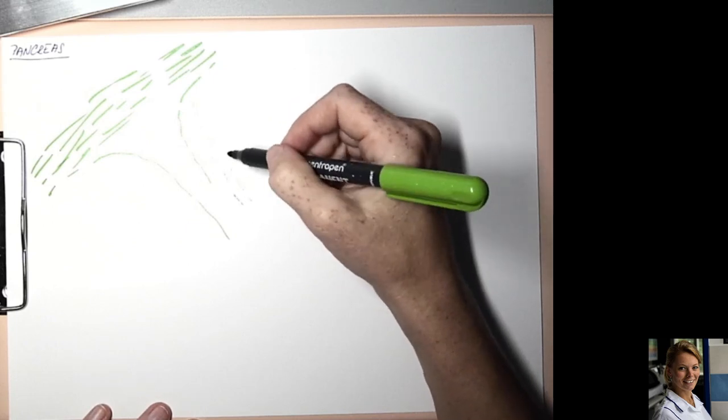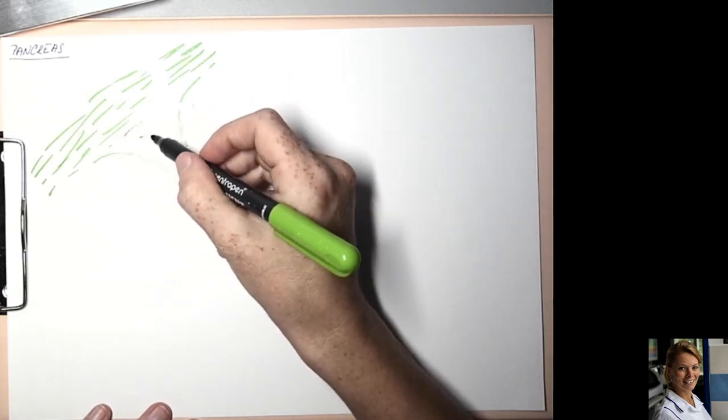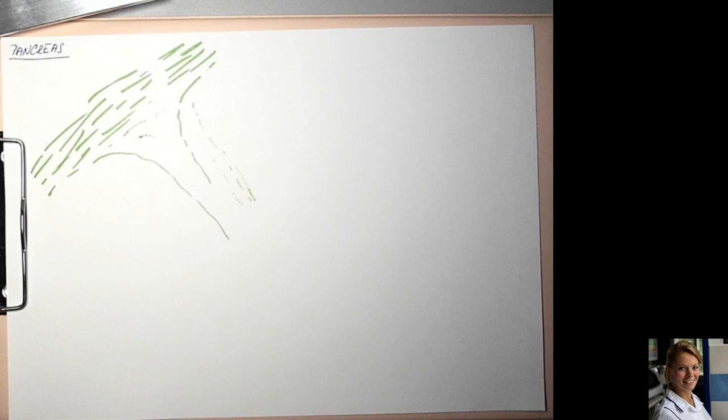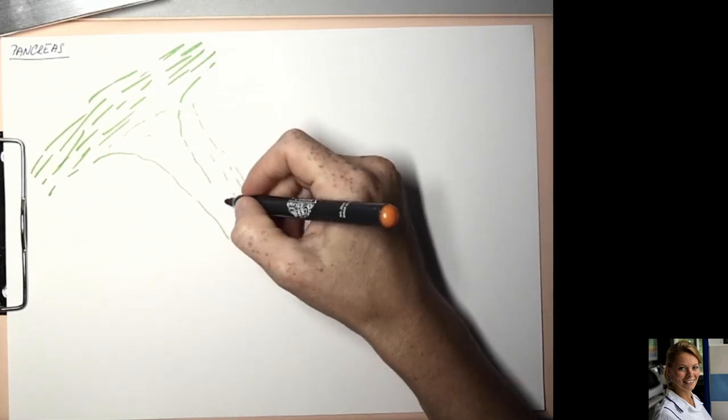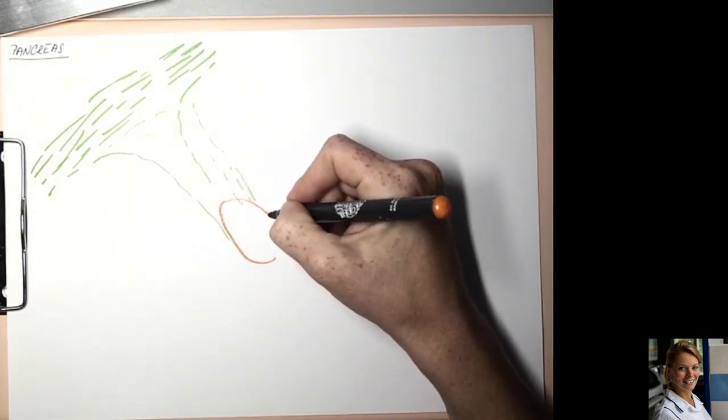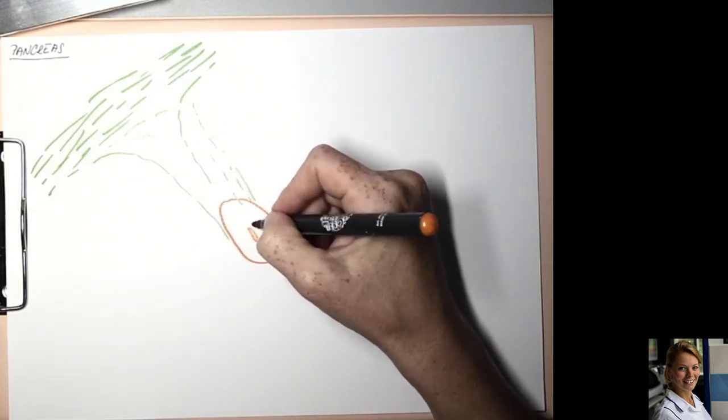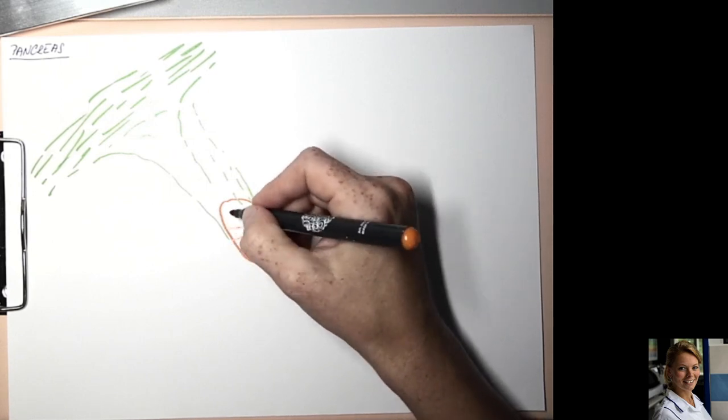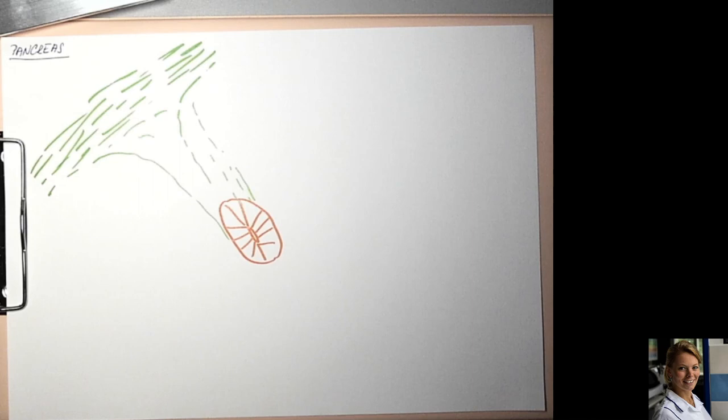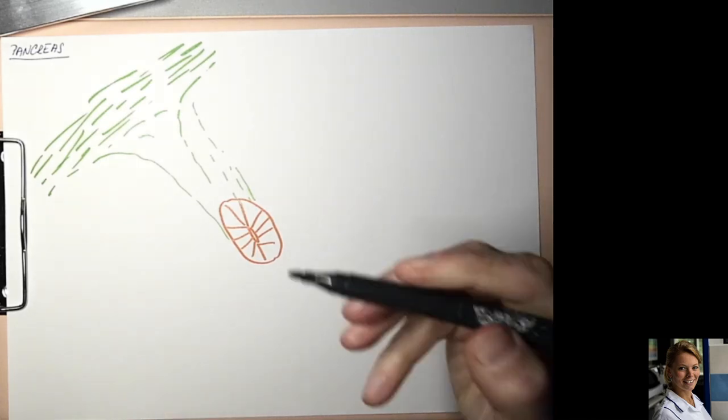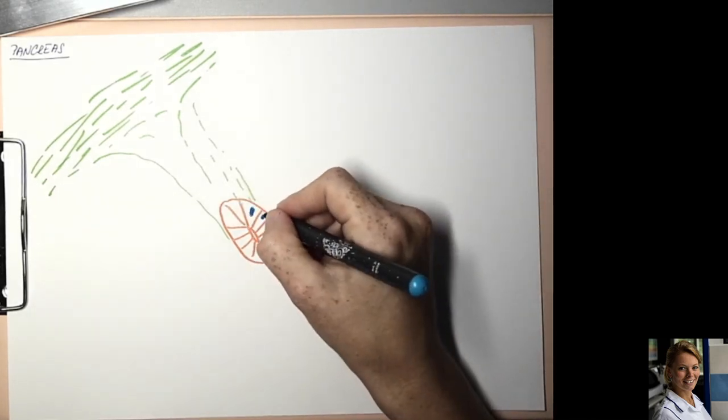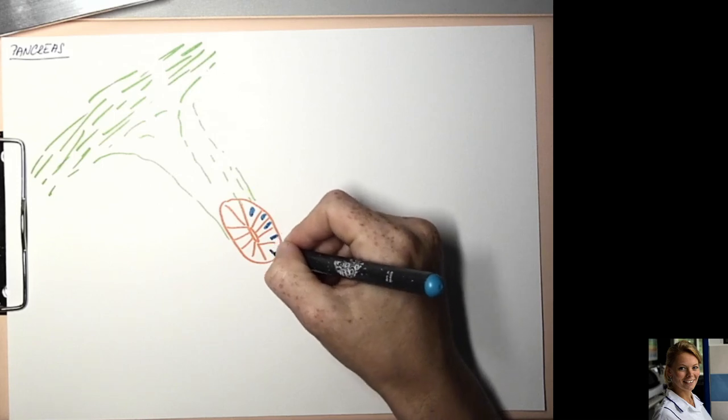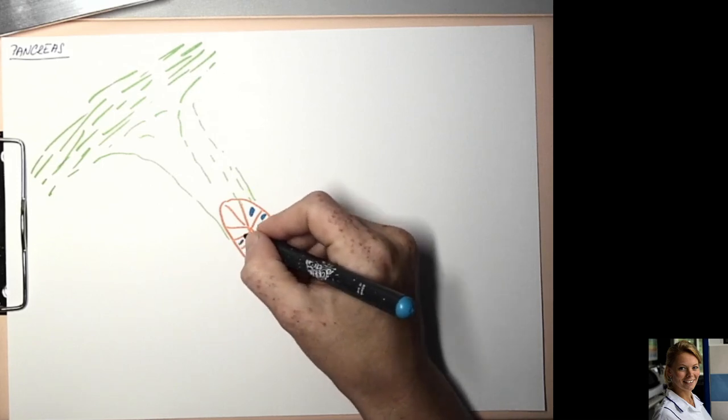Blood vessels, nerves and interlobar duct are located in the septa. Interlobar duct is lined by simple columnar epithelium. So this is interlobar duct in the connective tissue septa.